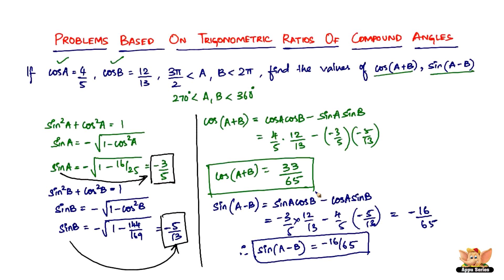This was a simple problem. All you have to do is identify which quadrant the angles lie in — here the fourth quadrant. By now you should be familiar with what happens in the fourth quadrant: cos is positive and sine is negative. That's what led to these answers. I'll see you in the next videos with more problems based on trigonometric ratios of compound angles.